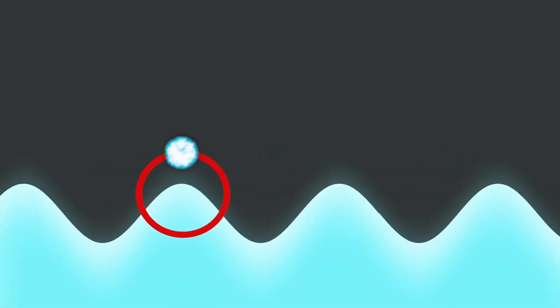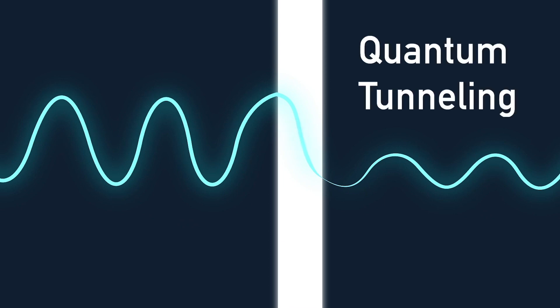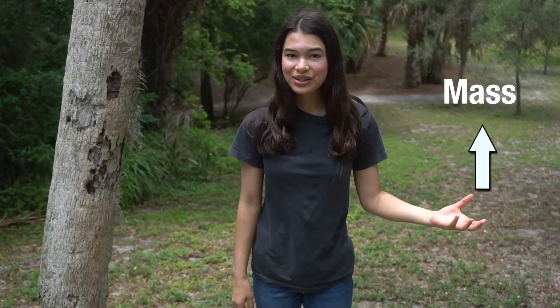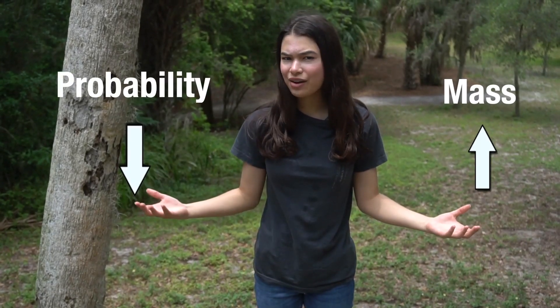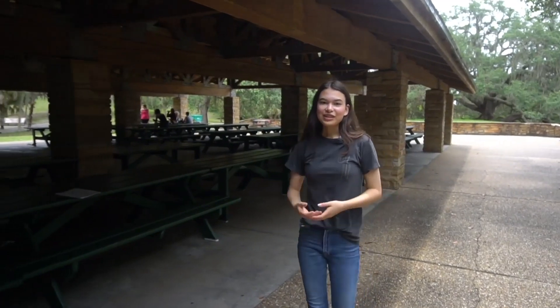Again, since our probability wave represents the possible locations of our particle, there's a possibility that our particle can be found on the other side or even inside a barrier, thanks to quantum tunneling. Don't get your hopes up — we won't be walking through walls anytime soon, because as the mass of an object increases, the probability of finding it on the other side of a barrier decreases, which is why quantum tunneling is just one of the many classical wisdom-bending phenomena that occur on the subatomic level.